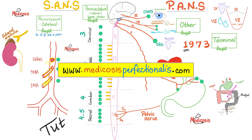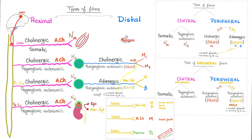You have preganglionic fibers and postganglionic fibers. Preganglionic is always cholinergic — always releasing acetylcholine, always reaching the ganglion — whether the postganglionic is parasympathetic or sympathetic. How about the postganglionic after the ganglion? If you are sympathetic, you will release norepinephrine onto alpha and beta receptors. But if you are parasympathetic, you are still cholinergic and you're going to release acetylcholine onto muscarinic receptors.